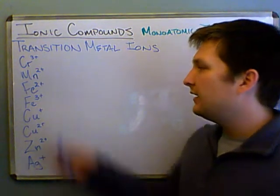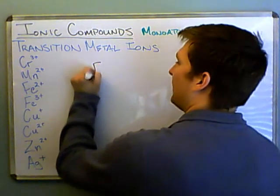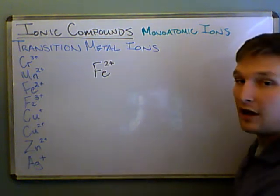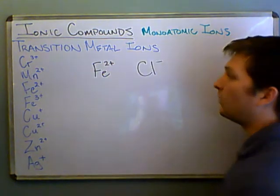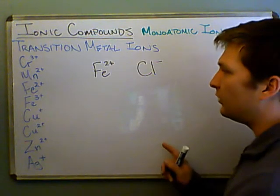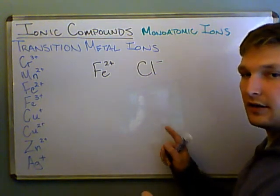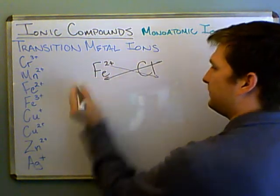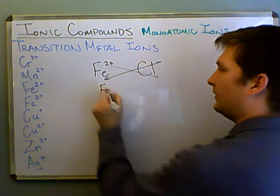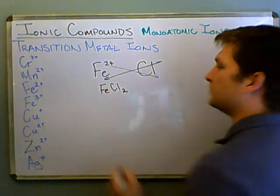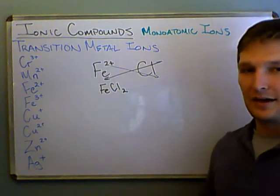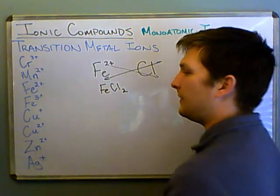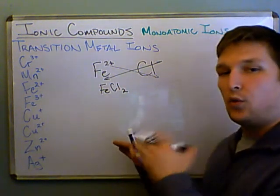For instance, let's say we had the iron 2 plus ion and we put that with the chloride ion — we know the chloride ion is minus 1. I want to write a formula for it and come up with a name. These are different charges, so I'm going to switch them: I get Fe with a 1 and Cl with a 2, giving FeCl₂. Now, what's the name of this? Since iron can have more than one type of ion, we have to show which one it is.